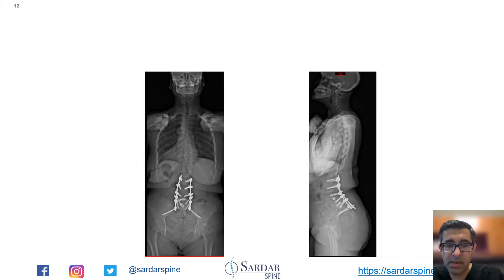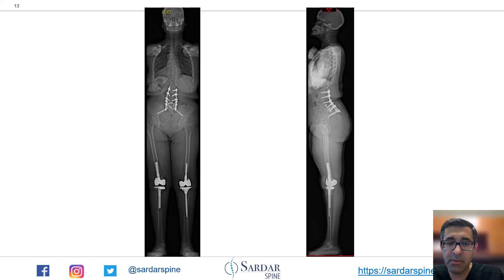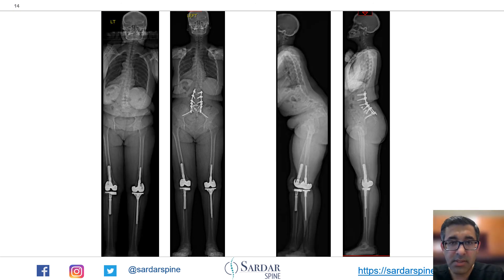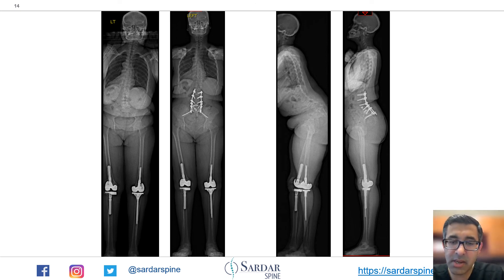Here you can see the post-op standing films for this patient in the AP and lateral view. We can see a very nice restoration of the lumbar lordosis compared to what she had prior to surgery. Here are the full-length films — you can see that this patient is now standing up perfectly straight, not bending her hips or knees and not compensating. This is a comparison of pre-op to post-op. Post-op she is standing perfectly straight, whereas pre-op she had severe sagittal malalignment and was trying to compensate from her hips and knees but still wasn't able to stand up straight.